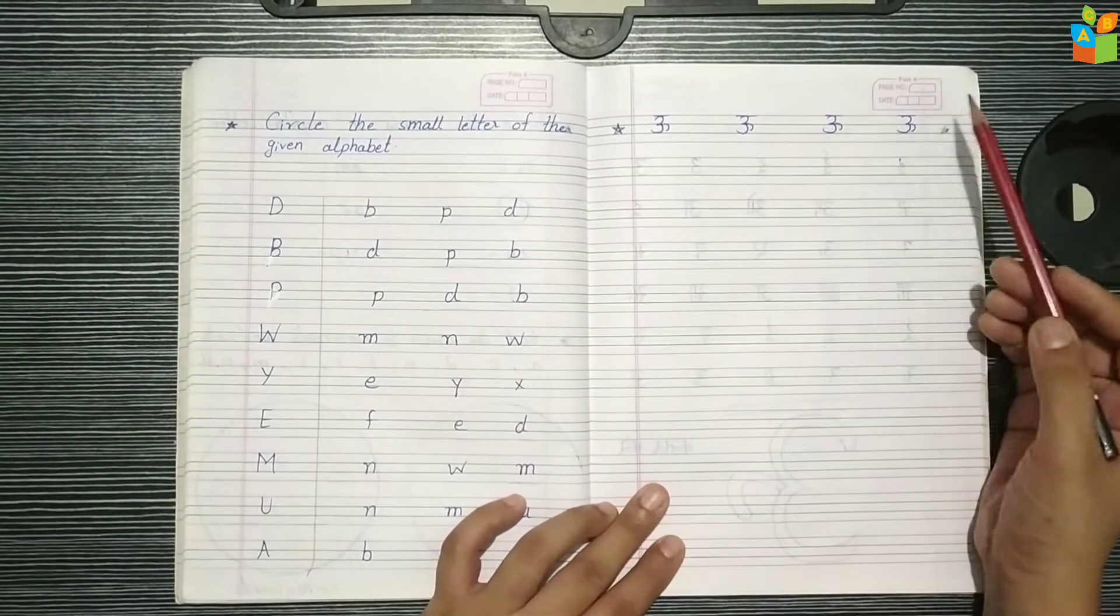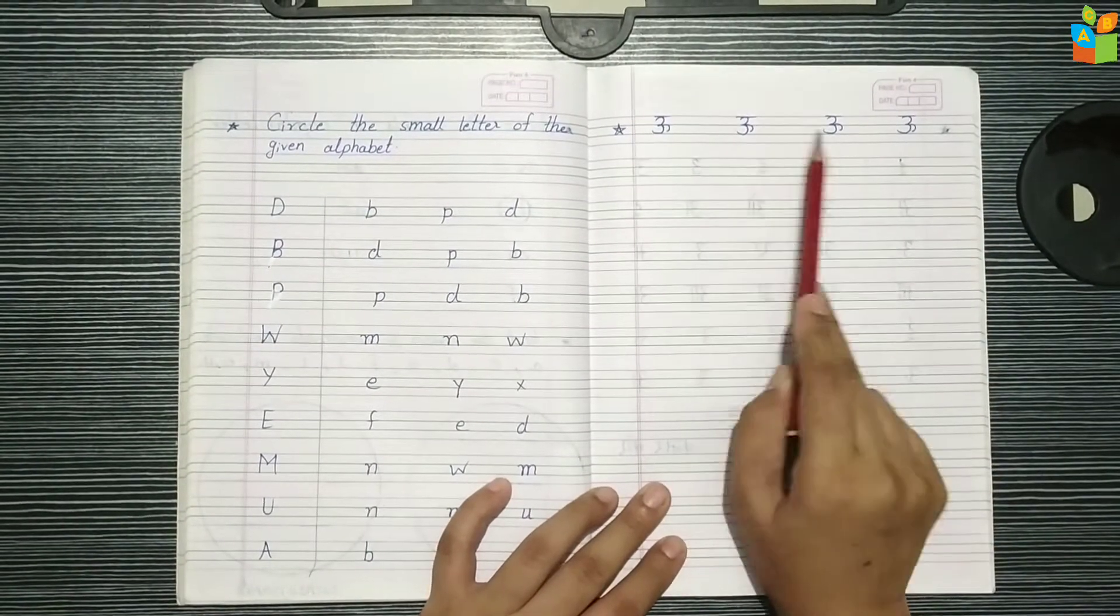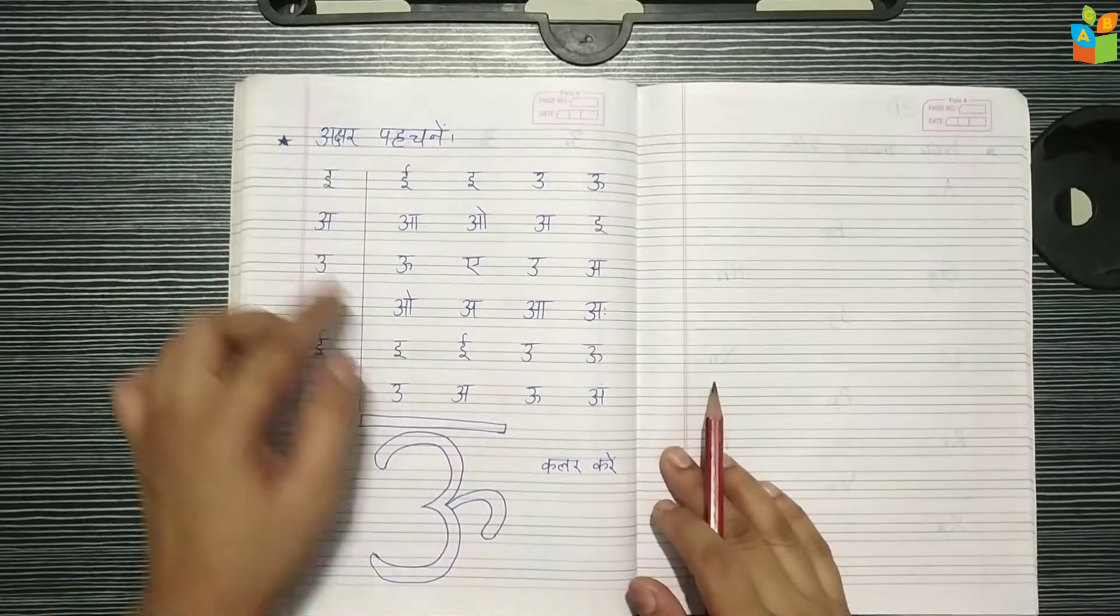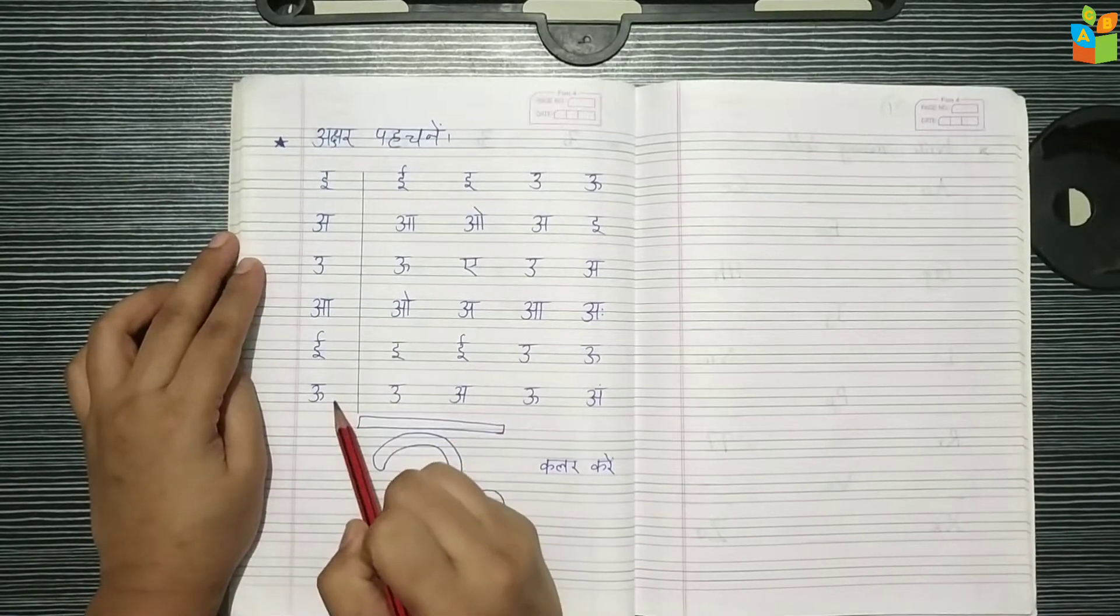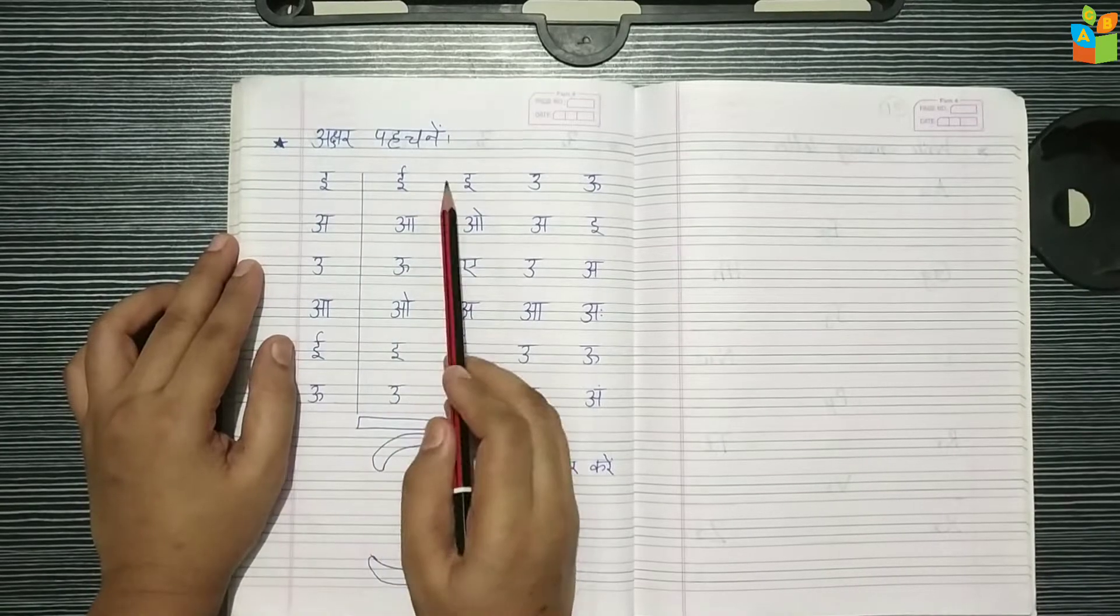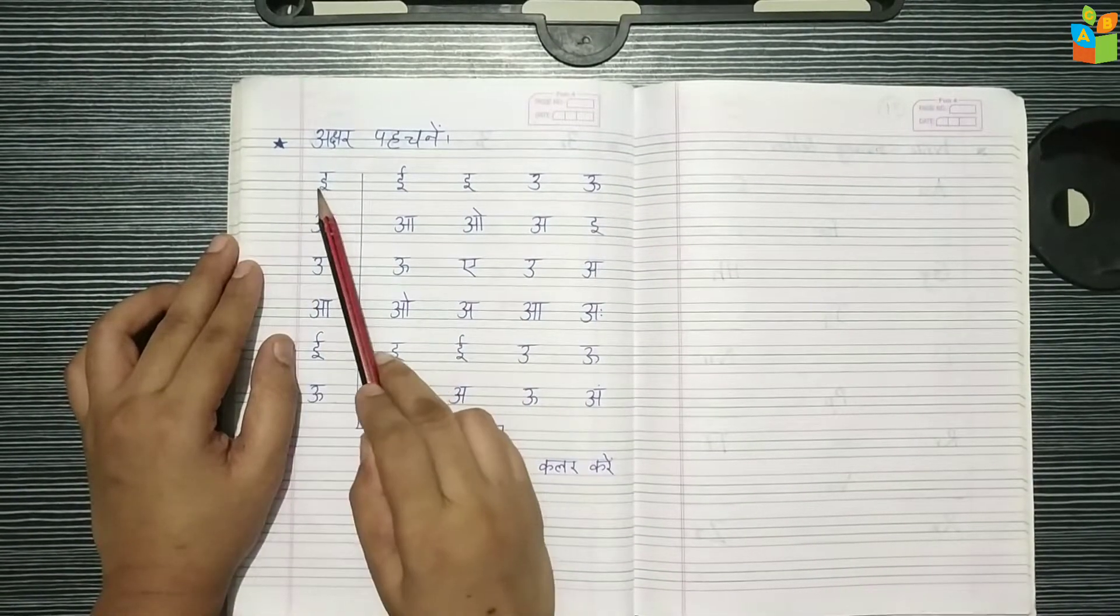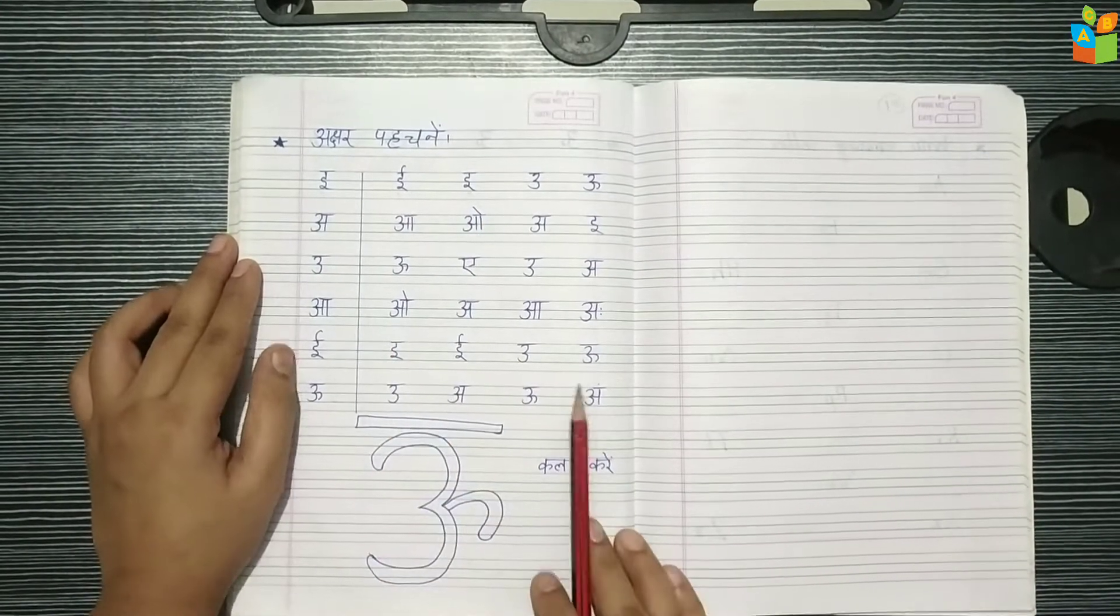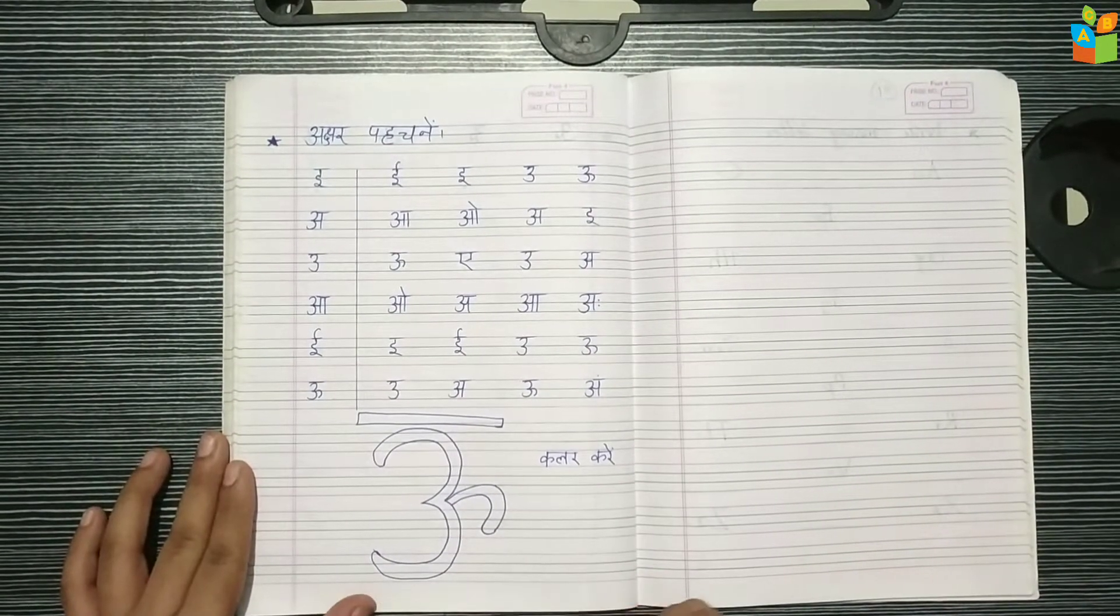In Hindi, I have given space for writing skills. I have written a space for writing skills and circle it. Like this is E, so the child has to know E and circle it. I have made that to color it.